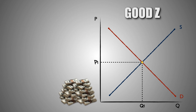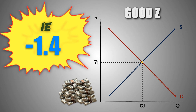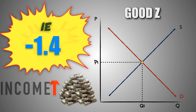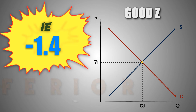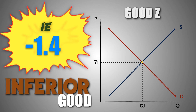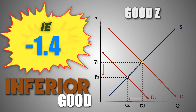Now assume that this is the market for good Z. Good Z has an income elasticity coefficient of negative 1.4 and the consumer's disposable income increases. Because the income elasticity for good Z is negative, we know that good Z is an inferior good. As a result, if the consumer's disposable income increases, the demand for good Z, an inferior good, will decrease, causing the price of good Z to fall and reducing the quantity of good Z sold in the market.